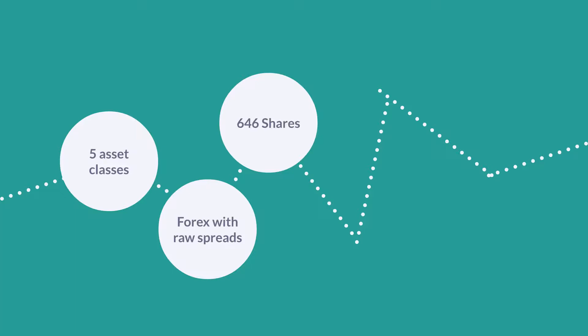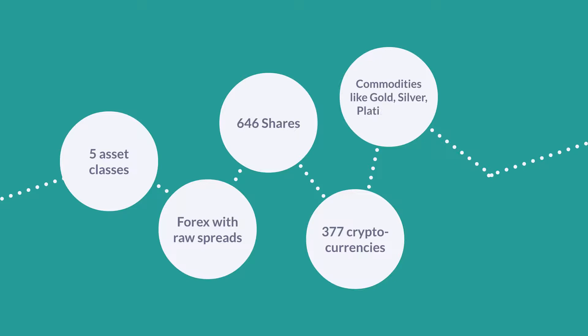You can trade 5 asset classes, namely Forex with raw spreads, 646 shares, 377 cryptocurrencies, commodities like gold, silver, platinum, oil, and 17 stock market indices.